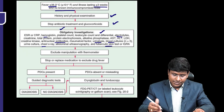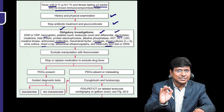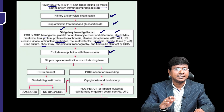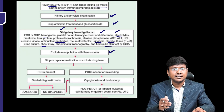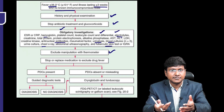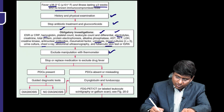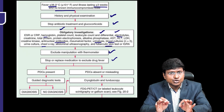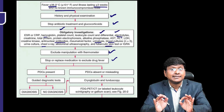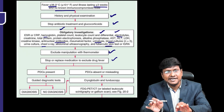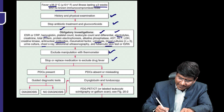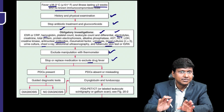These are the obligatory tests that should definitely be done. At the same time, you should rule out external factors like thermometer manipulation — that becomes a fraudulent fever — and you should also consider drug fever. Stop or replace the suspected medications.